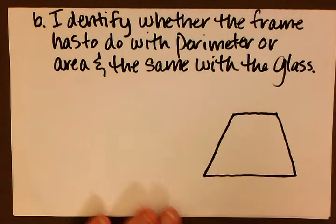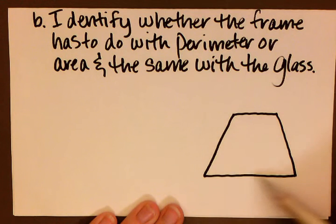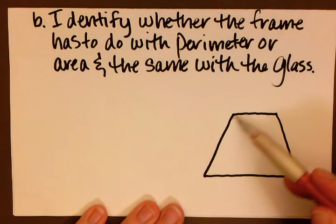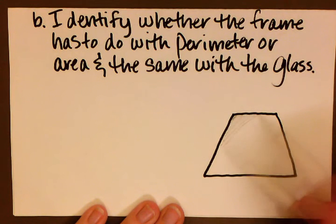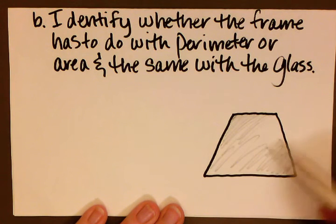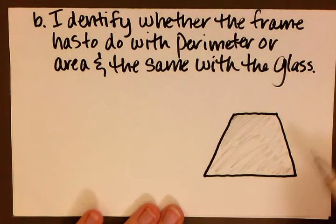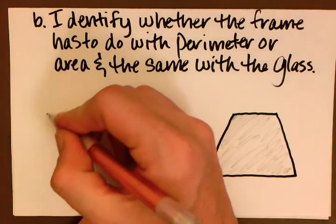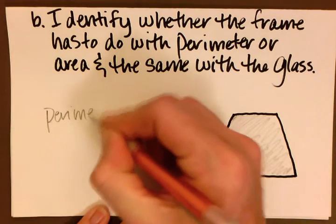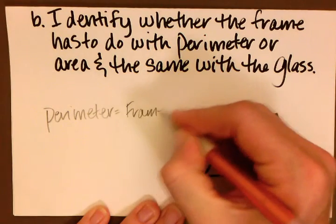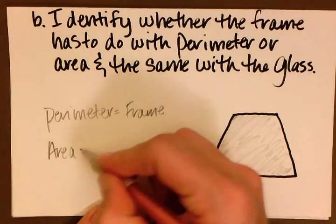The second part of this question asked us to identify whether the frame has to do with perimeter or area, and then also whether the glass has to do with perimeter or area. The frame is what's going to go around the outside. This is what we're going to add together to see how much framing we would need. So in this case, that's going to be perimeter. The glass is what we would, if we filled this all in, cover from corner to corner. That's how much glass we're going to need to cover the entire picture. So that is what we will have with our area. So in this case, we have perimeter equals the frame and our area equals the glass.